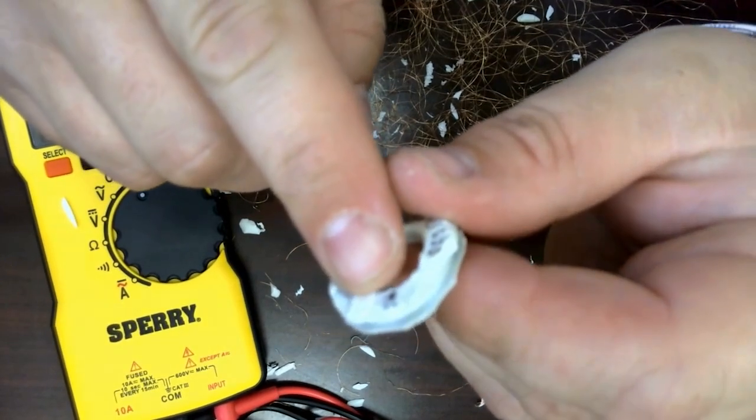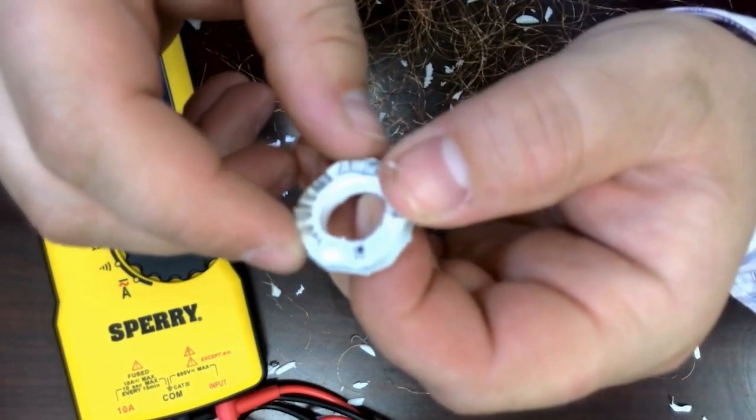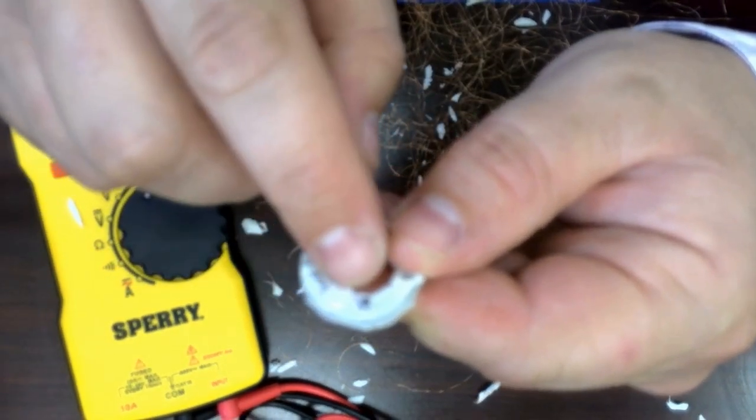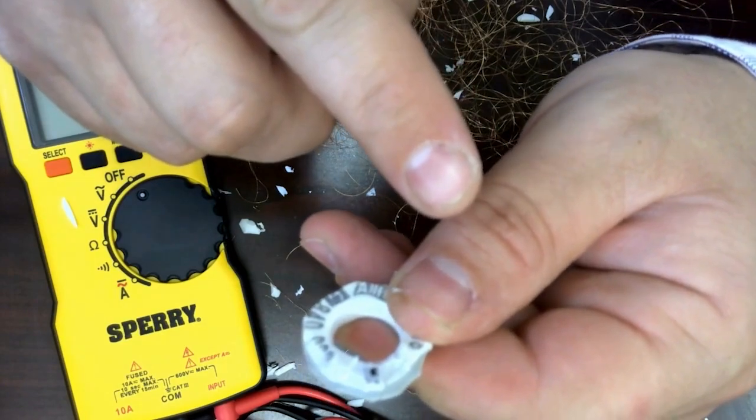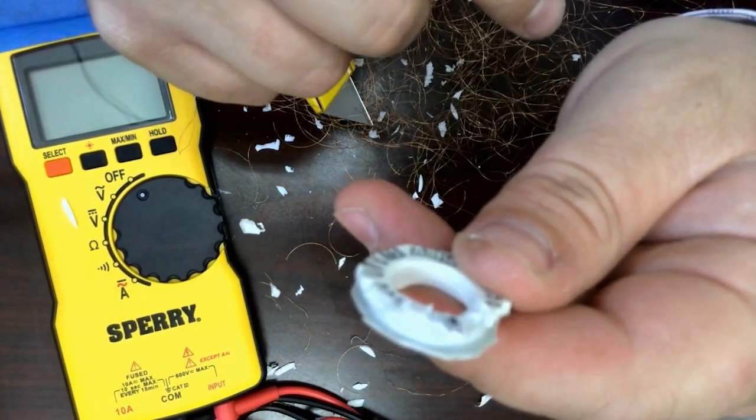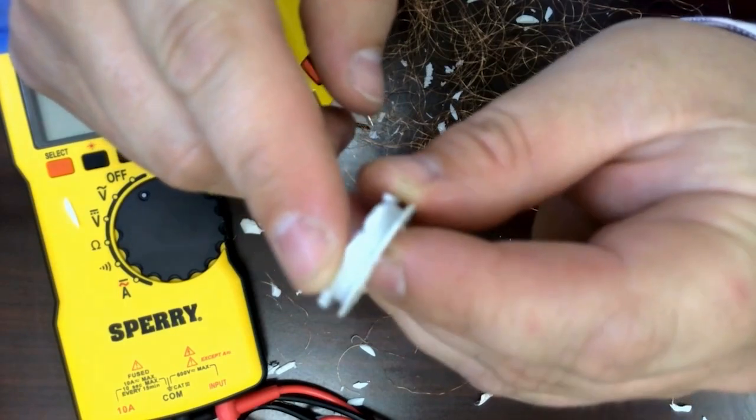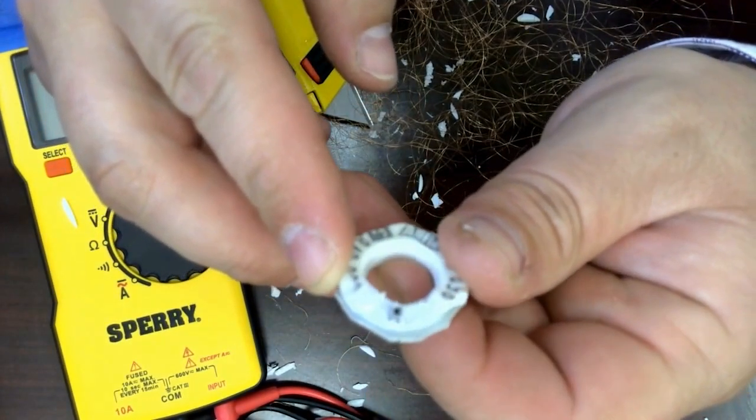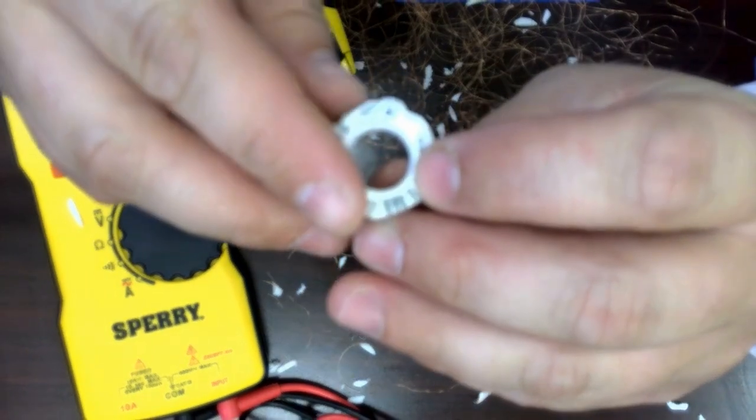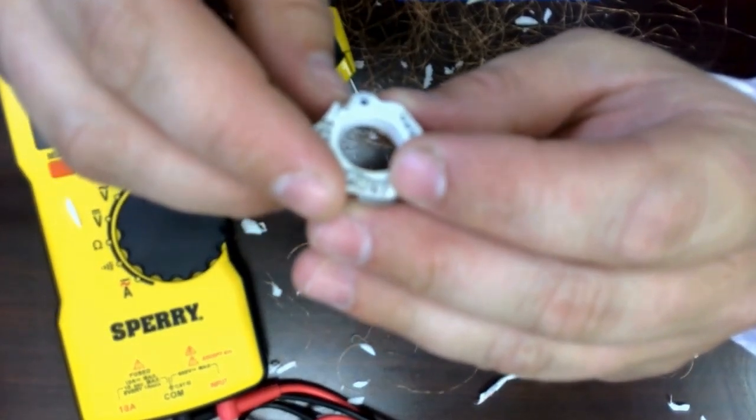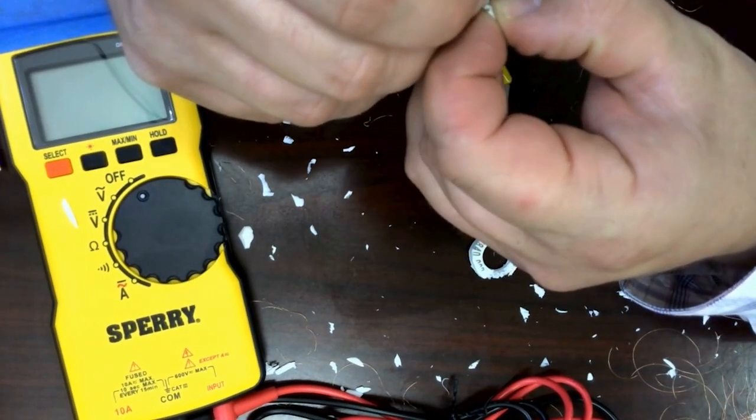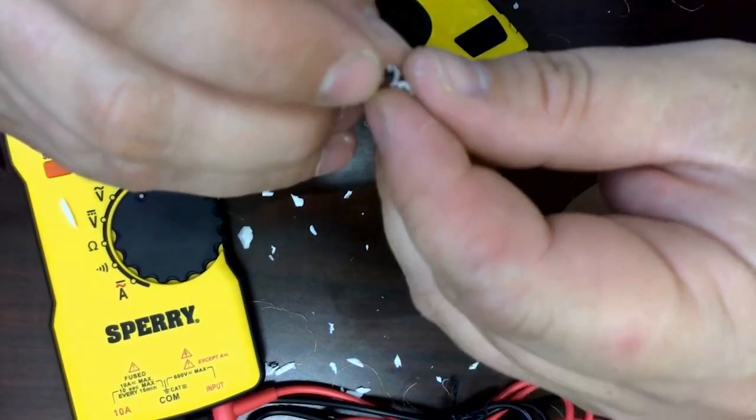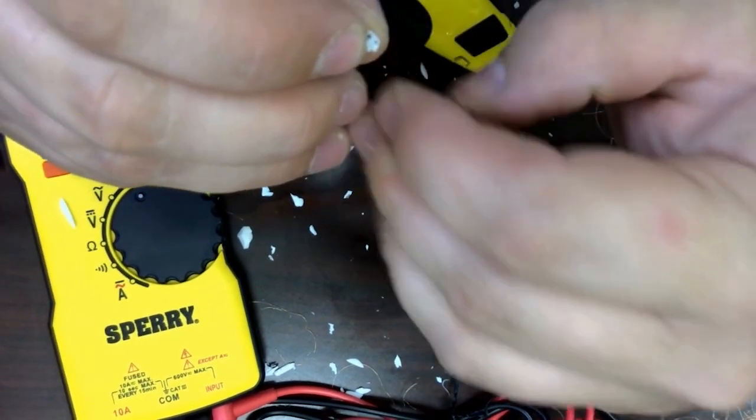We're going to try and remove this transponder as delicately as possible without damaging it just so you can see what it looks like. You'll notice that it's pretty embedded inside of the tag and this plastic is really tough to work with so this took about an hour to complete to get this transponder out of the tag but shortly you'll see that I was able to remove it and by carefully prying it apart I was able to cleanly get this transponder device out of the tag.